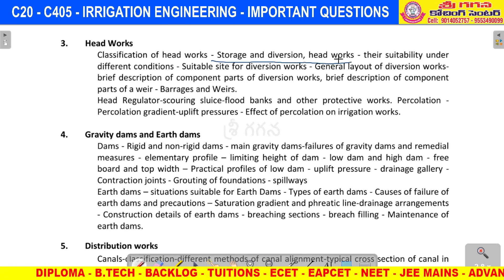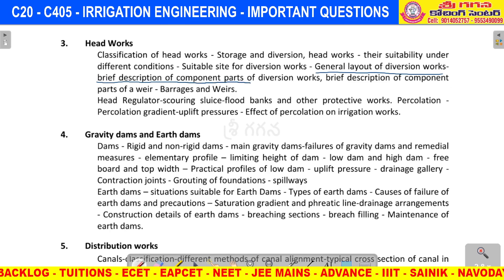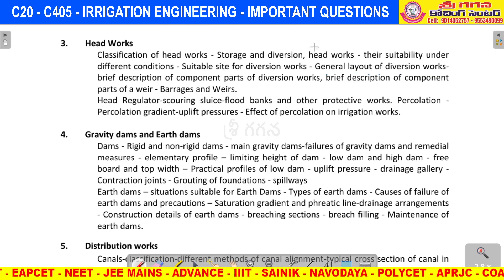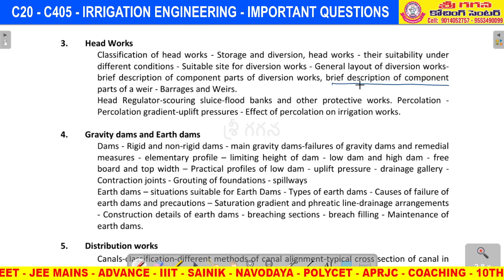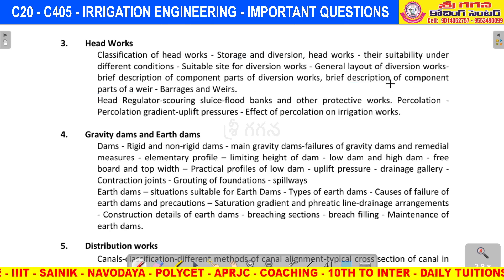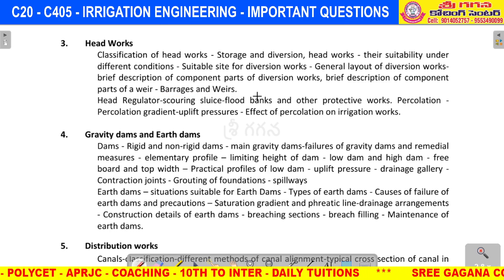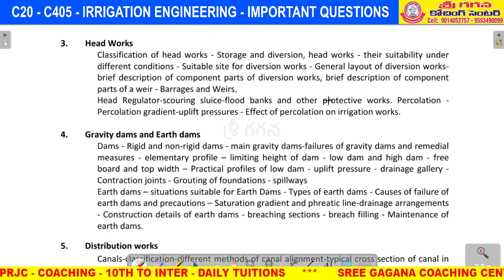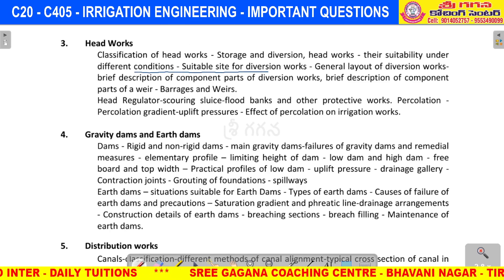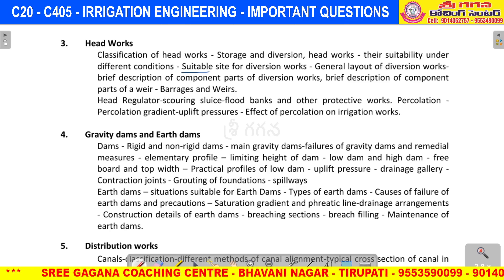For headworks — very very important: storage head and diversion head — 90% expected question. General layout of diversion headworks, description of diversion headworks — draw a neat diagram and explain the parts. Very very important: weir. Storage head vs. diversion head — examples: barrages and weir. The weir is very very important. Conditions suitable for site selection of diversion headworks, construction site selection considerations.